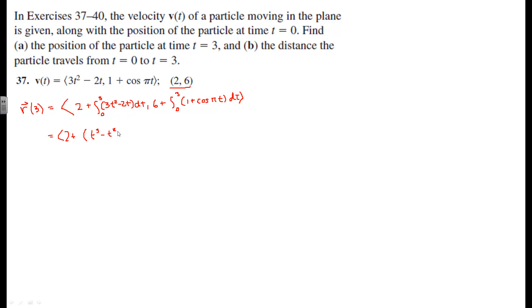Comma 6, and then we're going to do the same thing here. Plus the antiderivative of 1 is t, the antiderivative of cosine pi t is 1 over pi sine of pi t, and we're going to evaluate this from 0 to 3.